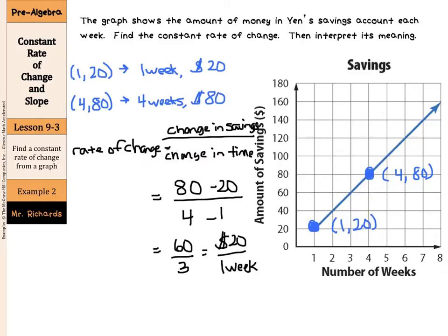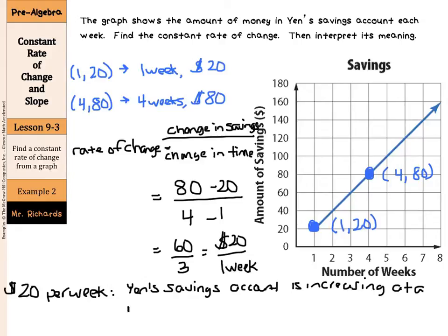Now, what does $20 per week really mean? Yen's savings account is increasing at a rate of $20 per week is our interpretation of the slope and the rate of change $20 per week. Now, one other way you may see this $20 over one week written is $20 slash week to represent $20 per week.